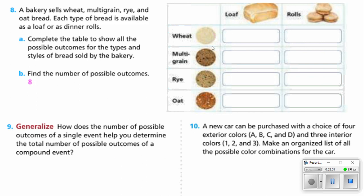Well, we've got 4 combinations here that can be each either a loaf or a roll. That could be wheat loaf, wheat rolls, multigrain loaf, multigrain roll, rye loaf, rye roll, oat loaf, and oat roll. So there are 8 possible combinations. 4 times 2 gives us 8 possible combinations.